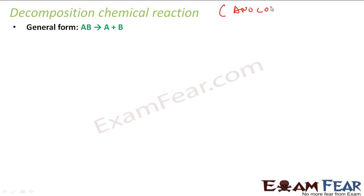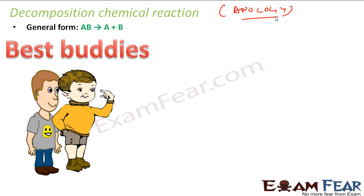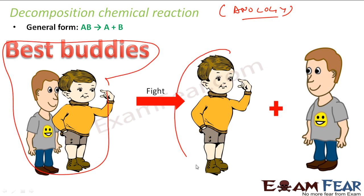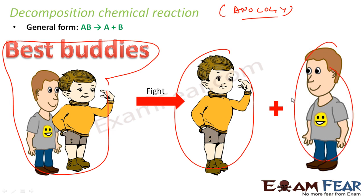The next topic is decomposition reaction. Let's study the analogy. There are two best buddies — they are just one identity. They fought over some topic, maybe one got less marks or something, and now they are two different people. So they were one identity called 'best buddies,' they fought, and they became two different identities. This is similar to what we have as a decomposition chemical reaction.